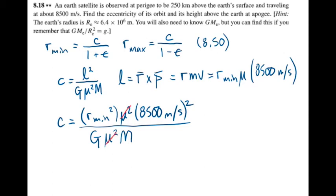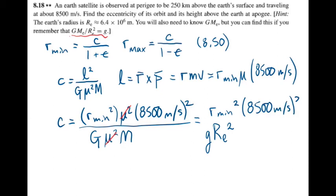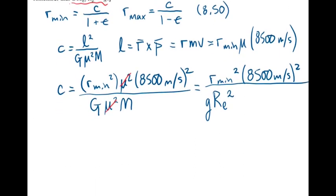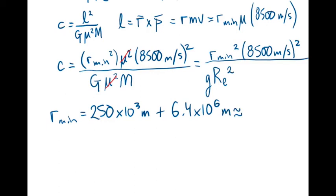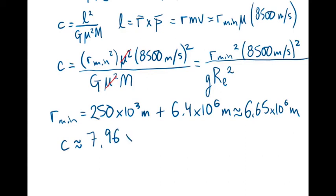Cancelling the reduced mass and replacing GM, which is approximately equal to G times M_Earth, with g times the radius of the Earth. Now, it's easy to make a mistake here if you forget that r_min is equal to 250 kilometers plus the radius of the Earth, which is equal to 6.65 times 10 to the sixth meters. With that, we can solve for C: approximately 7.96 times 10 to the sixth meters.